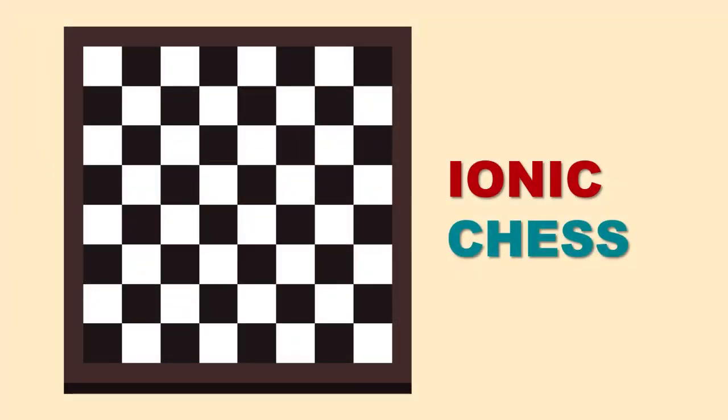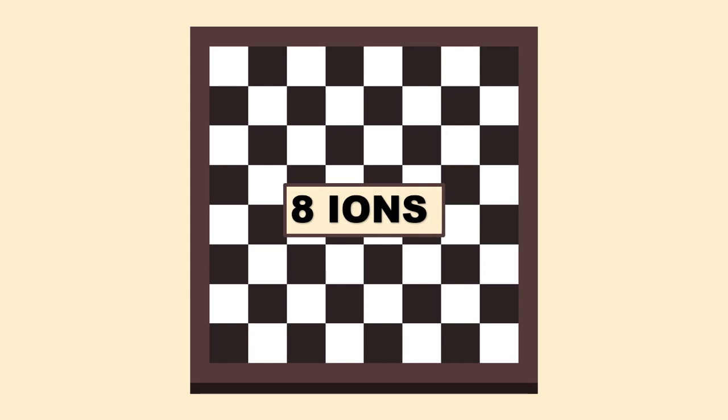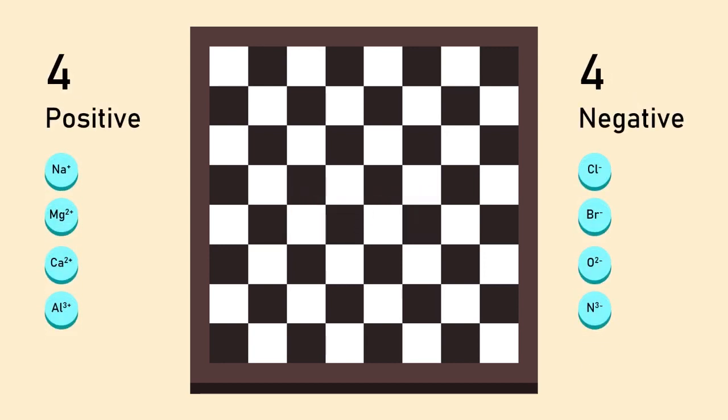Ionic chess is a unique chemical chess game in which we understand how different ions combine to form various compounds. Each player has eight ions in the game, of which four are positive and four are negative.